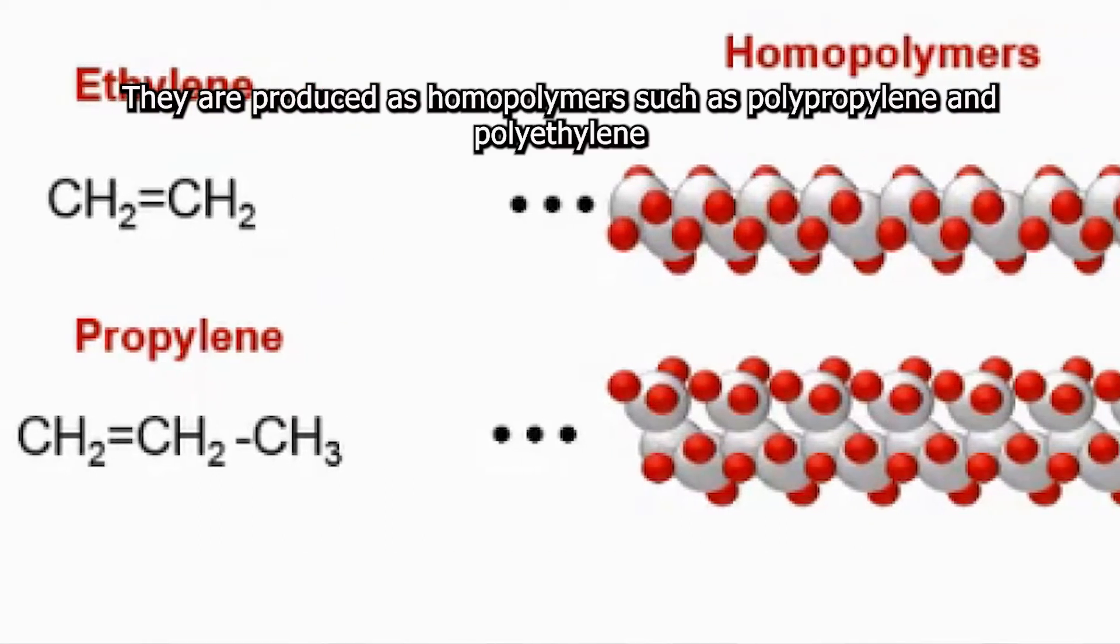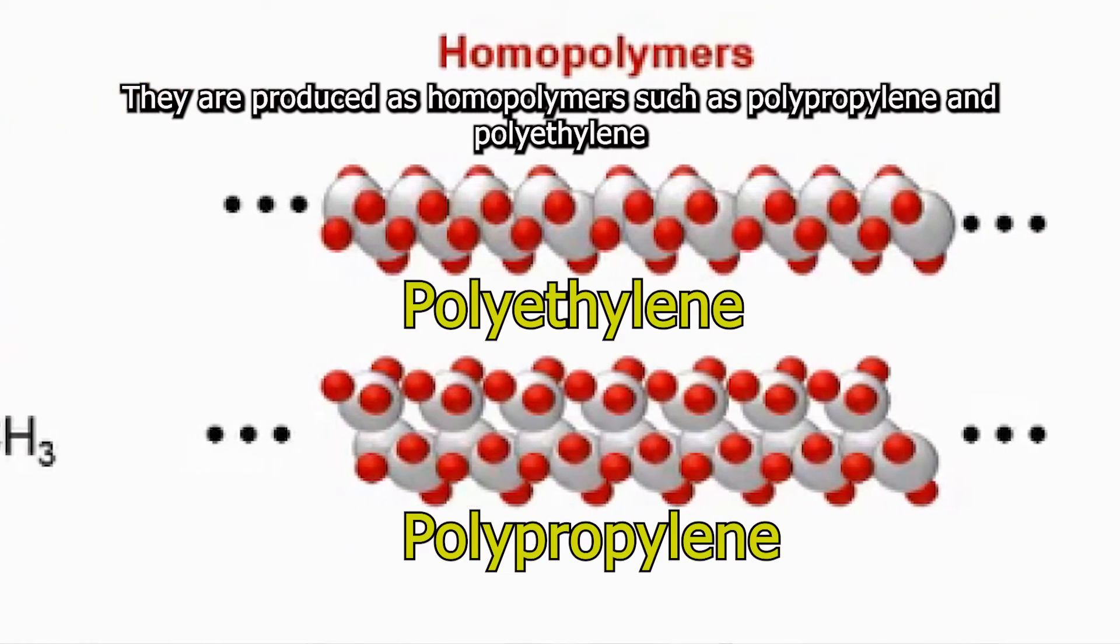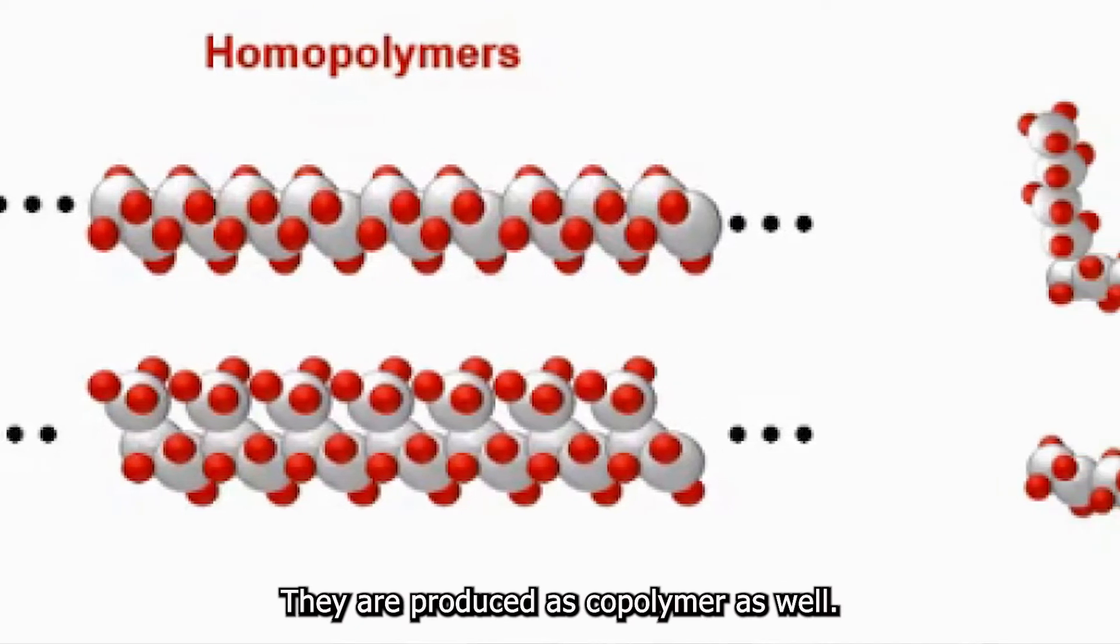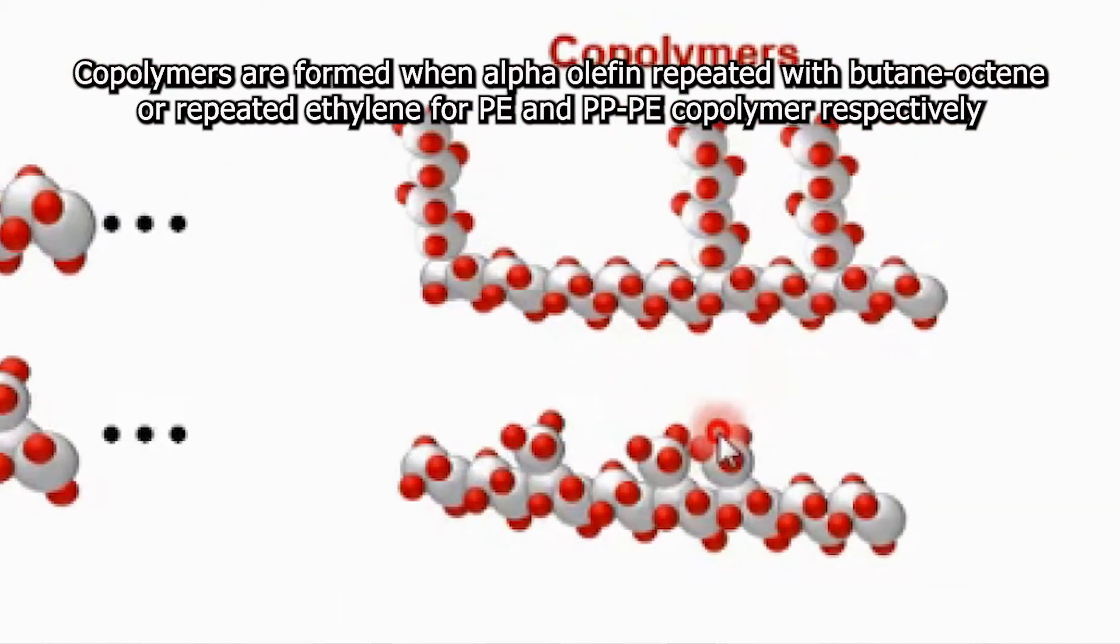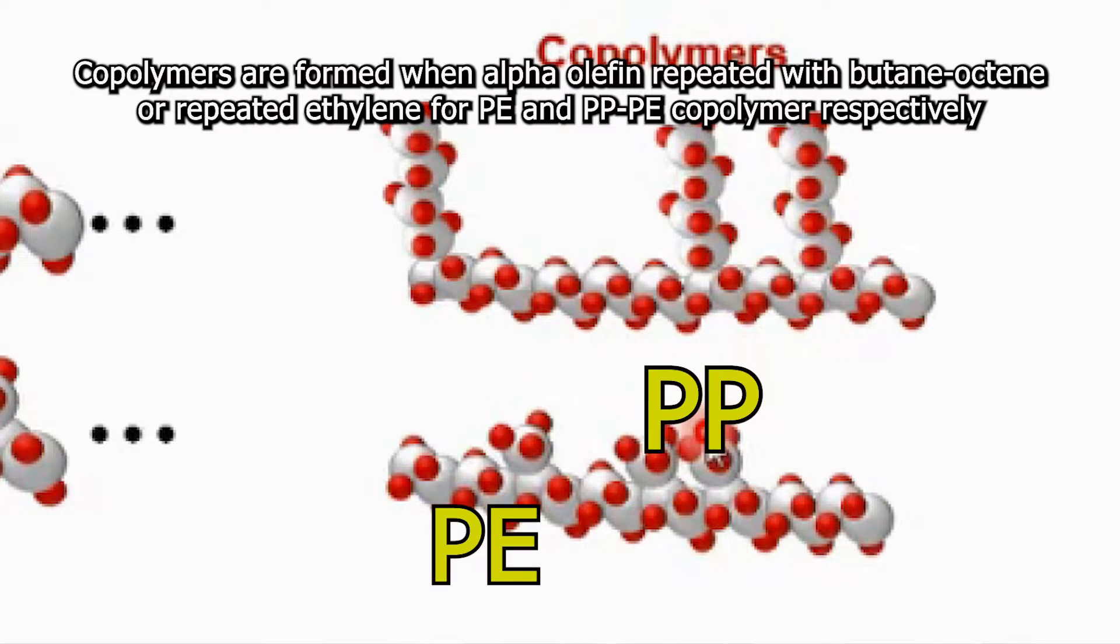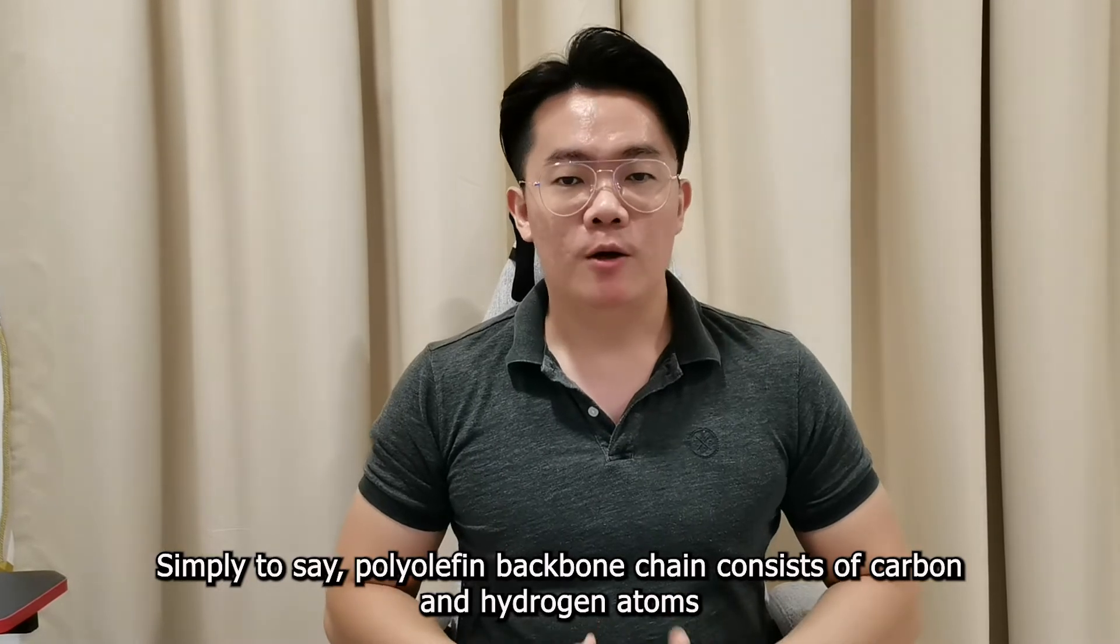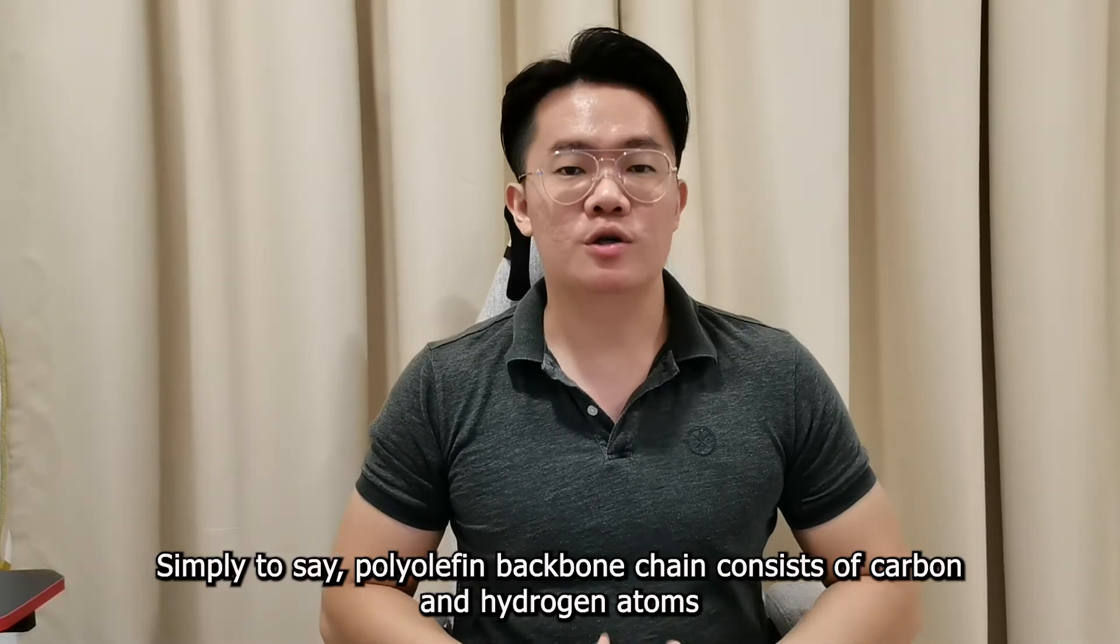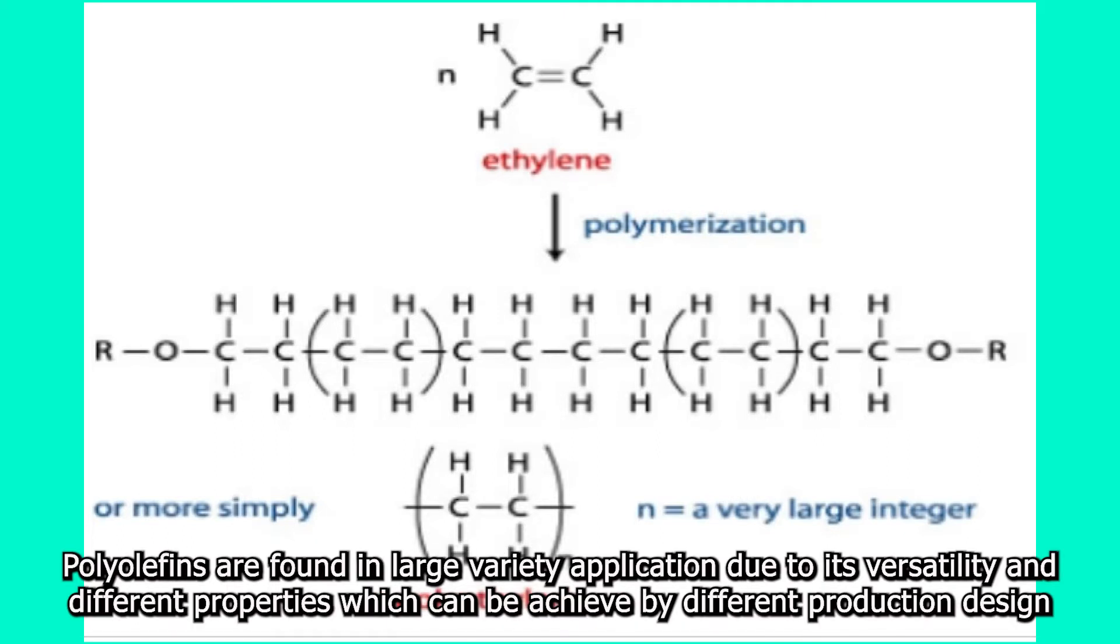They are produced as homopolymers such as polypropylene and polyethylene. They are also produced as copolymers. Copolymers are formed when alpha-olefin repeated with butene-octene or repeated ethylene for PE or PP-PE copolymer respectively. Simply to say, polyolefin backbone chain consists of carbon and hydrogen atoms.